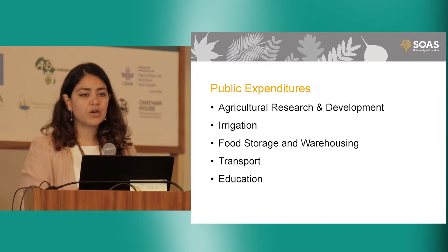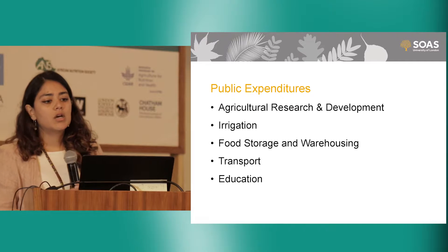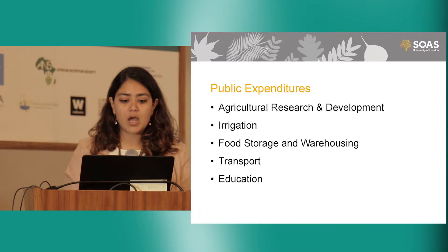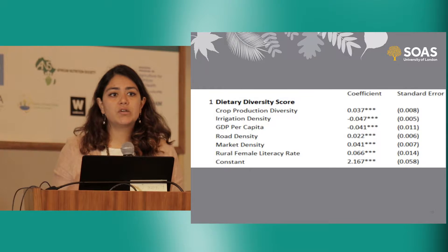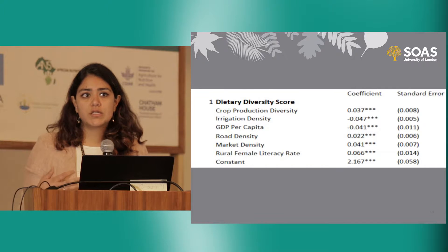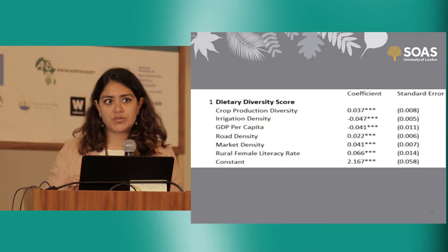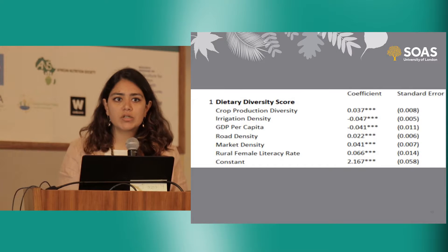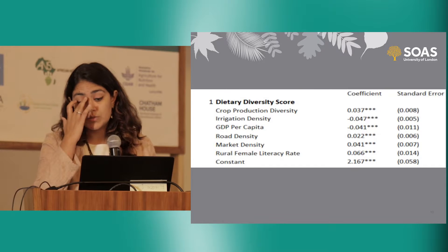Broadly, what I do is that each of the right-hand side independent variables has its own equation, and within those equations I have a public investment variable. The key public expenditure variables I concentrate on are agriculture R&D, irrigation spending, expenditure on food storage and warehousing, transport, and education. In terms of the key equation results, we find that crop diversity at state level is positively correlated with dietary diversity score — a 1% increase in crop diversity increases dietary diversity by 0.037 food groups, a very small marginal impact, but in line with cross-country studies.